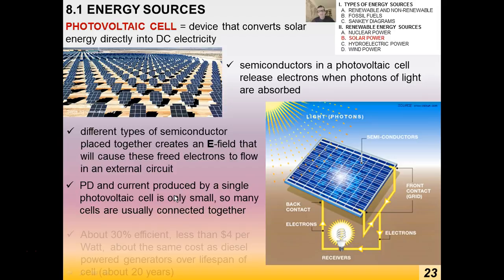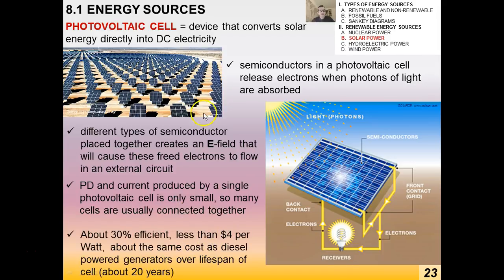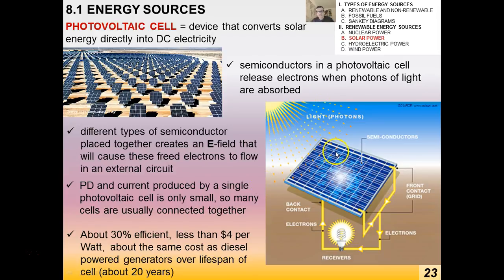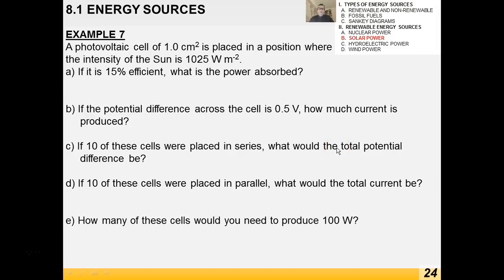Photovoltaic cells are about 30% efficient, cost less than four dollars per watt — about the same as diesel generators — and last about 20 years. You don't need to know the technical details of exactly how a photovoltaic cell works in terms of electron physics; just have a general sense of it.